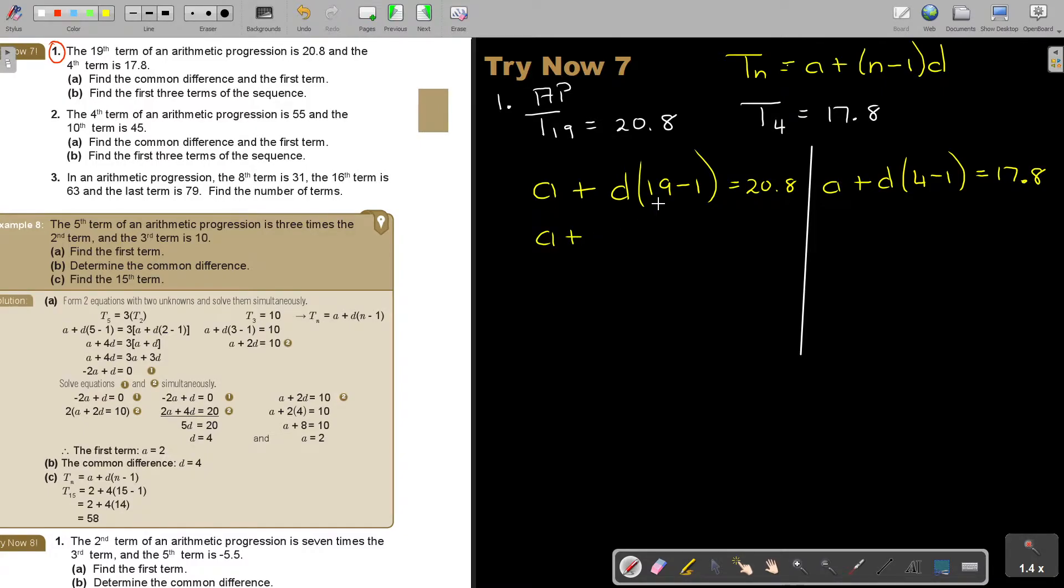So it's A plus, and this is 18 D. And that's 20.8. And then I'm just going to do this one. So this is A plus, and this will just be 3 D. And that's 17.8.